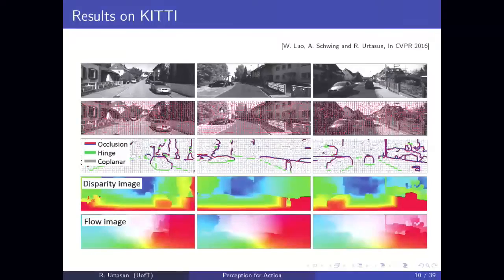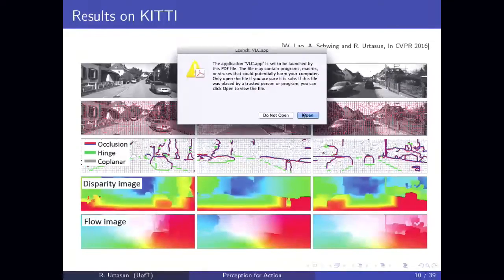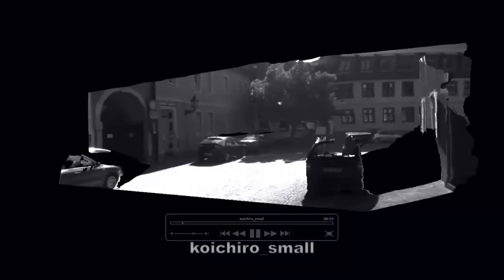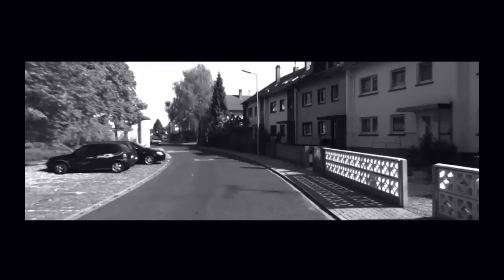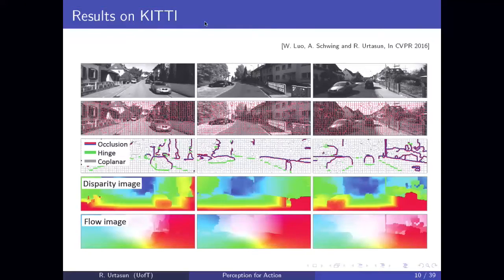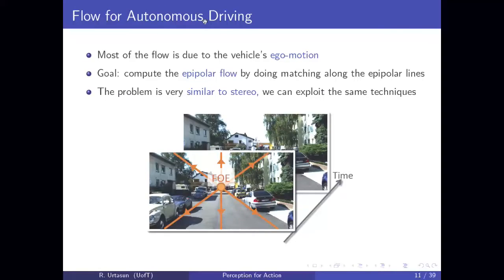You can get really nice estimates of where the depth is. Here you can see some examples in urban scenarios captured with a car driving around. Up to 40 meters you can basically replace the Velodyne, so you have a much cheaper solution to sensing the 3D environment. It's okay handling things like thin structures, which is actually quite difficult for cameras.